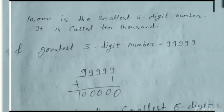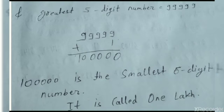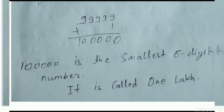The greatest five-digit number — we write five nines. The greatest six-digit number — we write six nines. The greatest digit — we write nine seven times. Now if we add 1 to the greatest five-digit number, it becomes the smallest six-digit number, which is called one lakh. Whenever you are asked the smallest three-digit number, you write 1 followed by two zeros. The smallest four-digit number — you write 1 followed by three zeros.